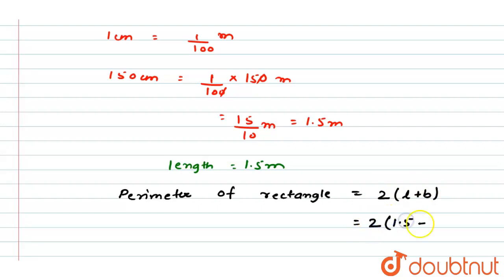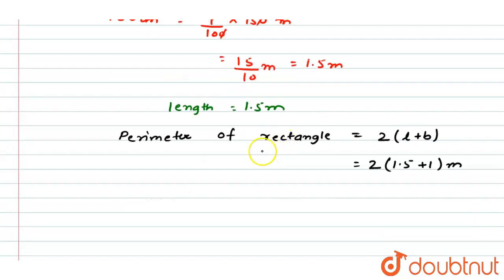into 1.5 plus 1.5 is equal to 2.5 meter. So 2.5 into 2 is equal to 5 meter. So perimeter of rectangle is